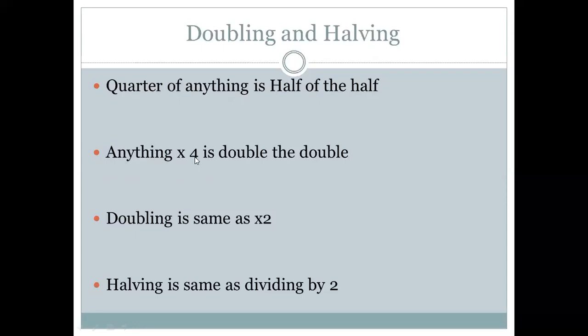And if I said anything multiplied by 4, I find double the double. It's another trick. What about doubling alone? When I double a number, it is same as multiplying it by 2. Right, when I say double 2, it's 4, which is same as 2 times 2.